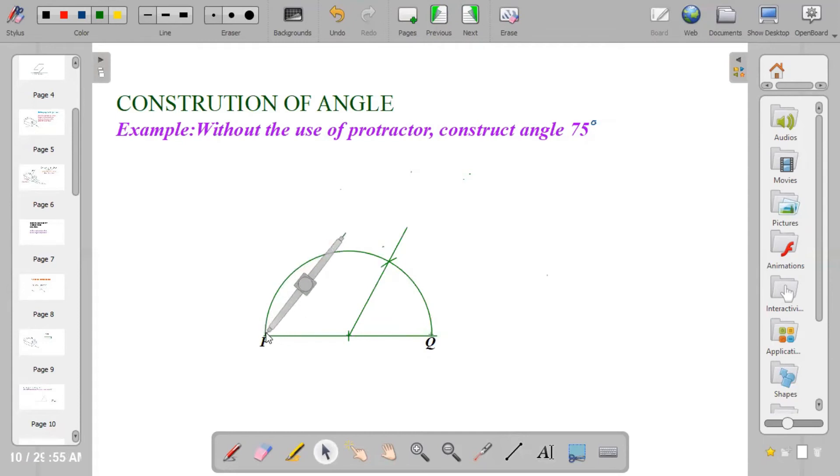Center at point P, strike an arc above. Take it to point Q, using the same radius, strike another arc to cut the first arc.